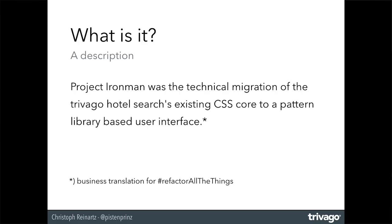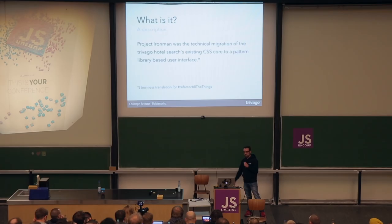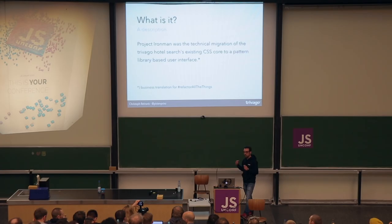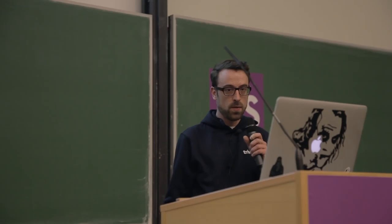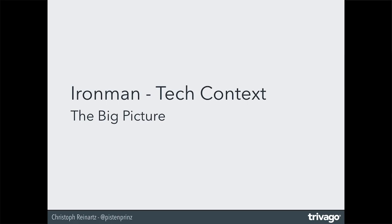So what was this project Iron Man about? That's basically the business translation, because if you do something like refactoring, it's always important that you can also translate it to the management, so that people know what you're basically doing. The background of this project was that we started at the beginning of last year to create a pattern library at Trivago and started to create a frontend and design system at Trivago, because our frontend, let's say, was a bit historically grown, and we had some issues which I will show you later. To be enterprise enough, we also had to create a driver task for it. The task was created in October and resolved one month later, which is also important for the project.